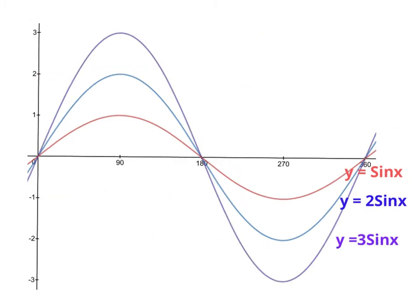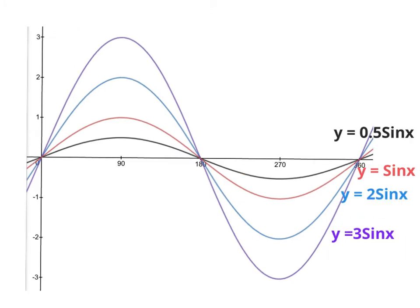So is that number in front connected to the highest and lowest points on the graph? Here is the sin graph with y equals 2 sin x in blue, and I've added y equals 3 sin x in a purpley colour — the 3 sin x graph goes from 3 to minus 3. I've also added y equals 0.5 sin x, which only goes as high as 0.5 and as low as negative 0.5.